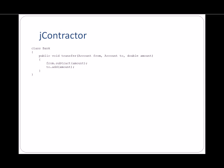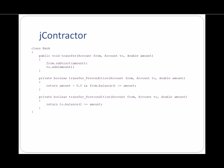JContractor allows a programmer to express contracts as methods in a class. Take a simple example that implements the transfer method that we looked at in the last slide. The precondition and postcondition can be written as methods that return Boolean values and follow a simple naming convention.